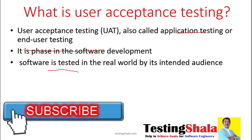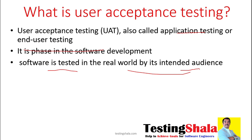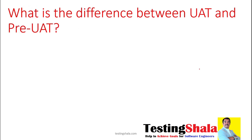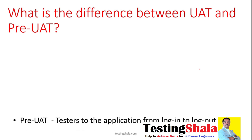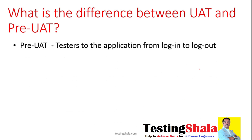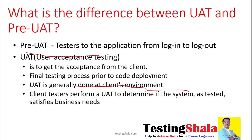What is the difference between user acceptance testing and pre-UAT? Pre-UAT is normally done by the tester from login to logout, from an end-to-end perspective. As part of UAT, the client tester or end user performs the UAT to verify whether it really satisfies the business requirement, and based on that they are going to sign off from the UAT perspective.